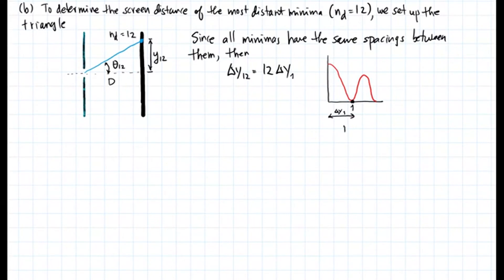To determine the screen distance of the most distant minima, that is ND equal to 12, we set up the triangle. Here's my situation where from the slit opening to the screen is D. The distance that I want to calculate is delta Y12, where I have this angle theta 12 here. However, I know that all the minimas have the same spacings between them. So I can also write delta Y12 is equal to 12 times the spacing of one of the minimas.